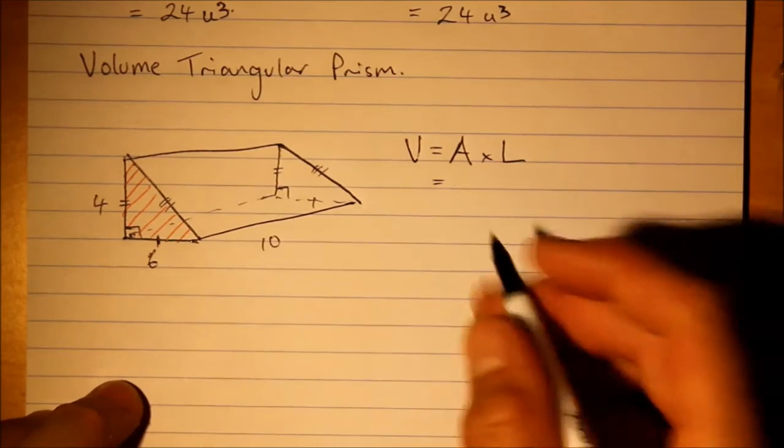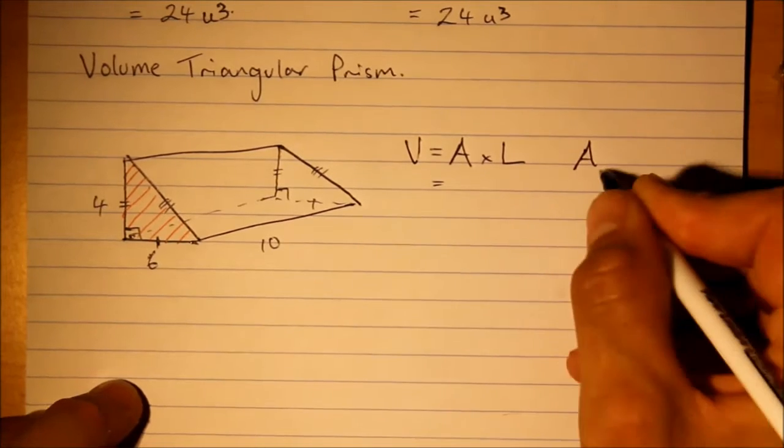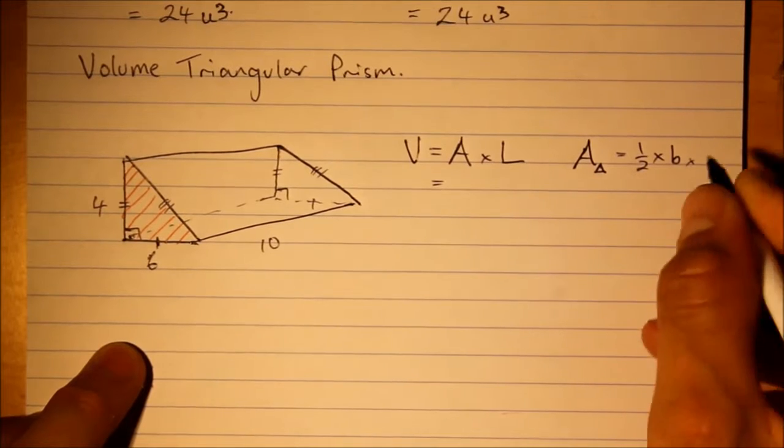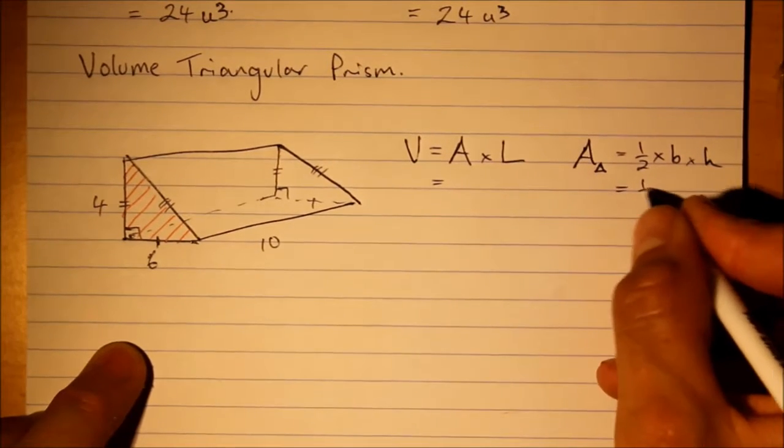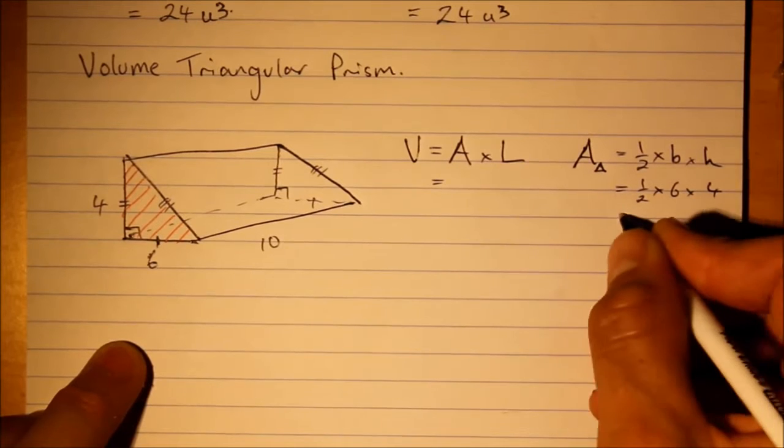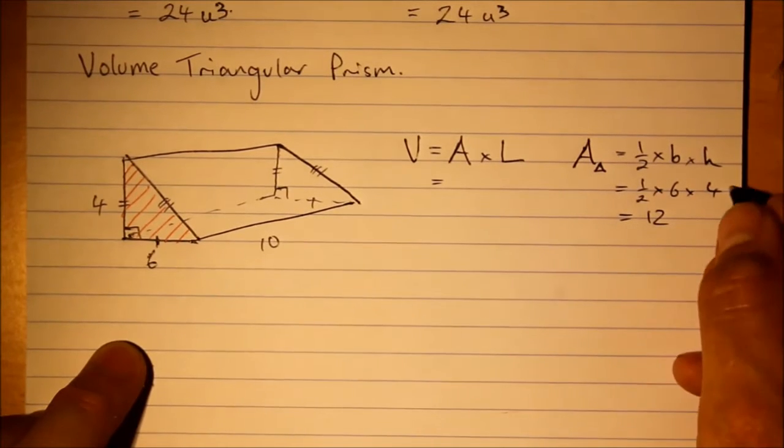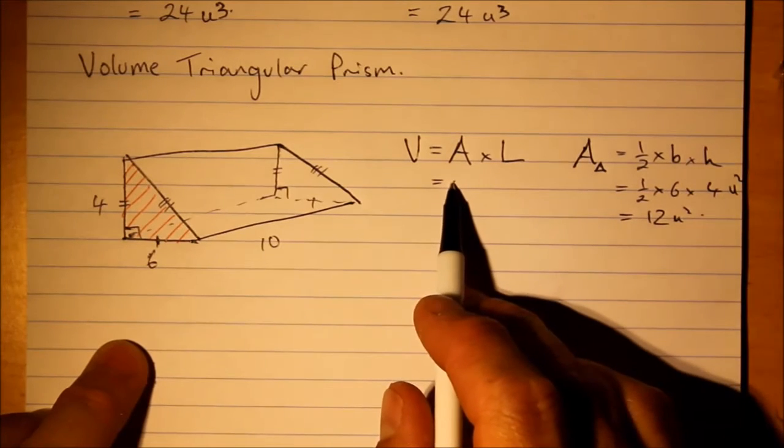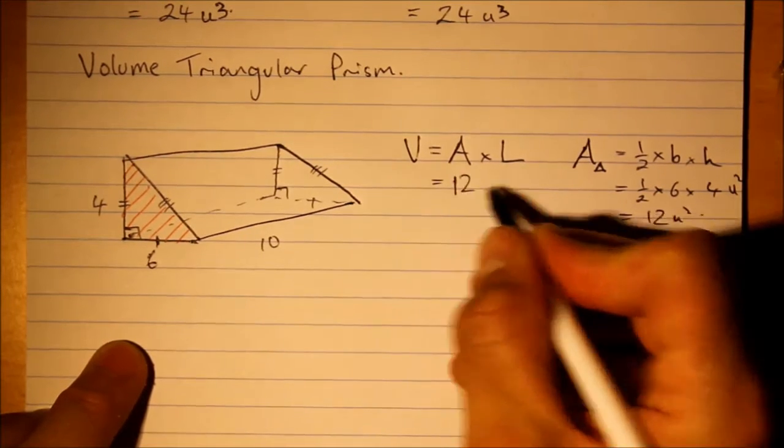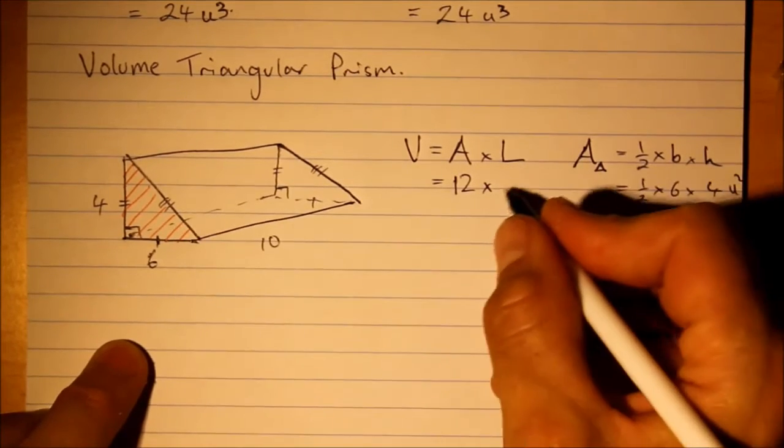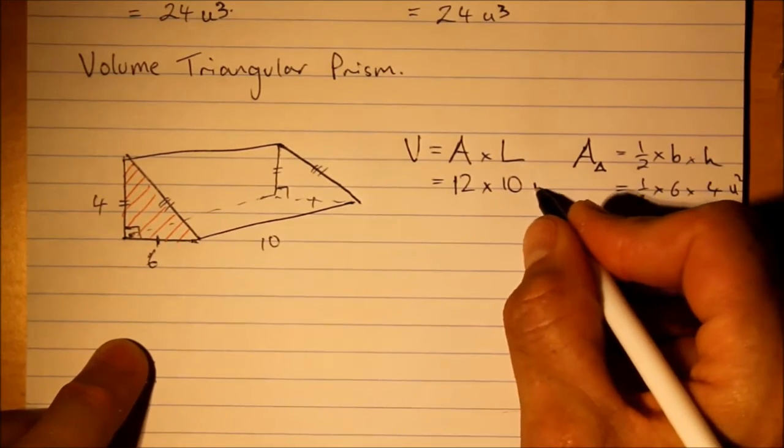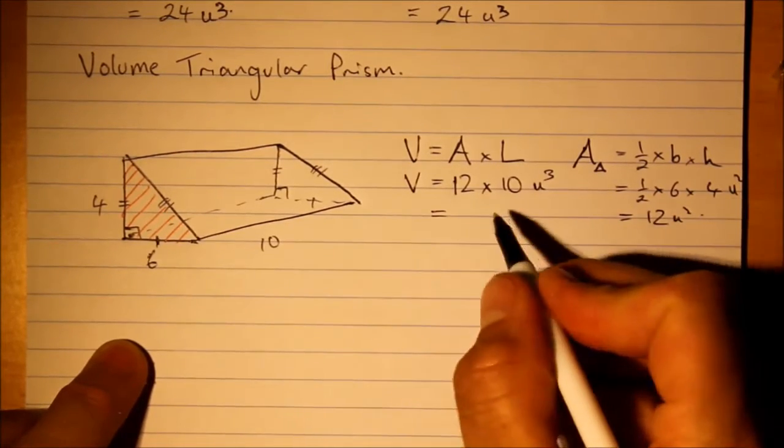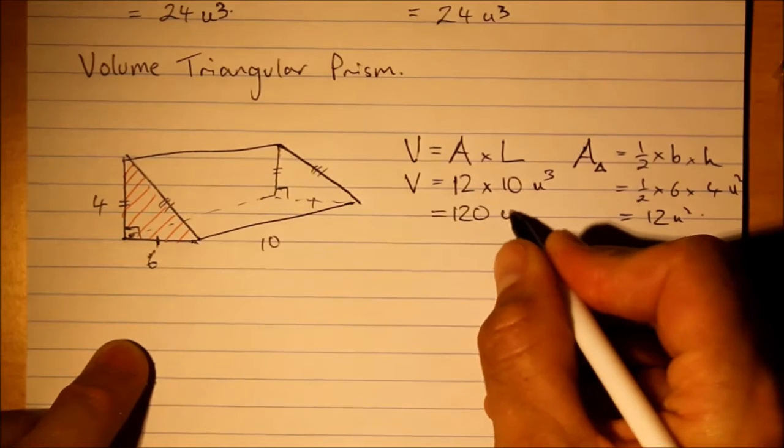So, what's the area of the triangle? Area of the triangle is half times the base times perpendicular height. Half times six times four. That's twelve units squared. So, that's twelve there multiplied by ten and we get our cubic units and that's 120 units cubed.